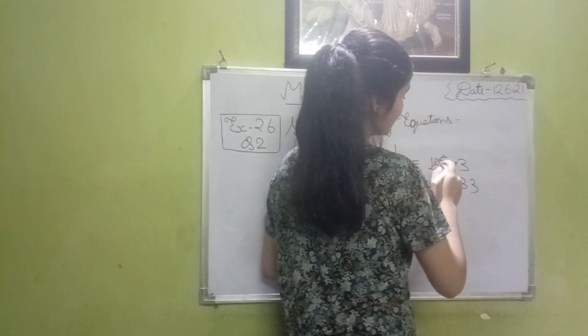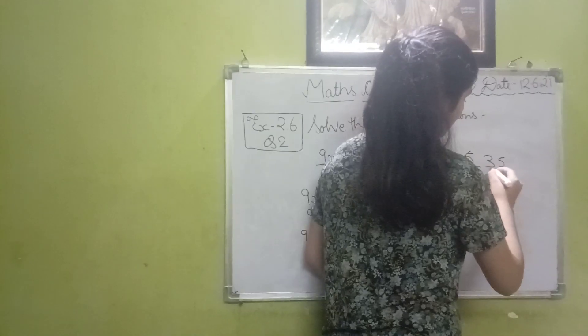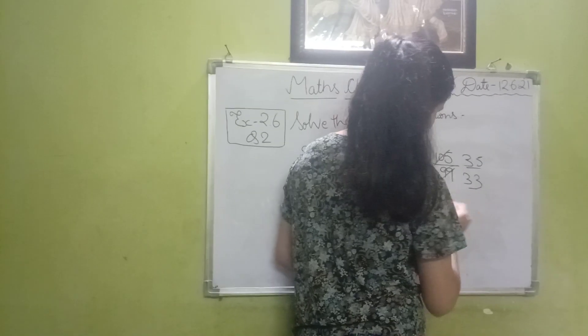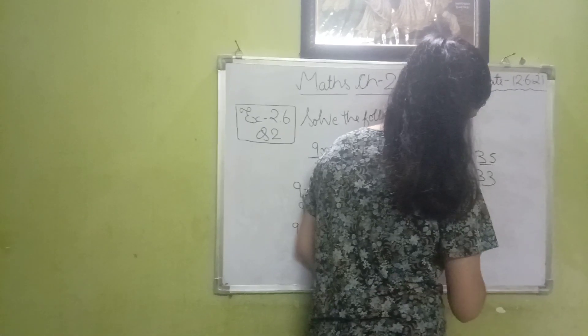99x equals to 105. 1 and 3, 5s are 15, so 35 upon 33. x equals to 35 upon 33.